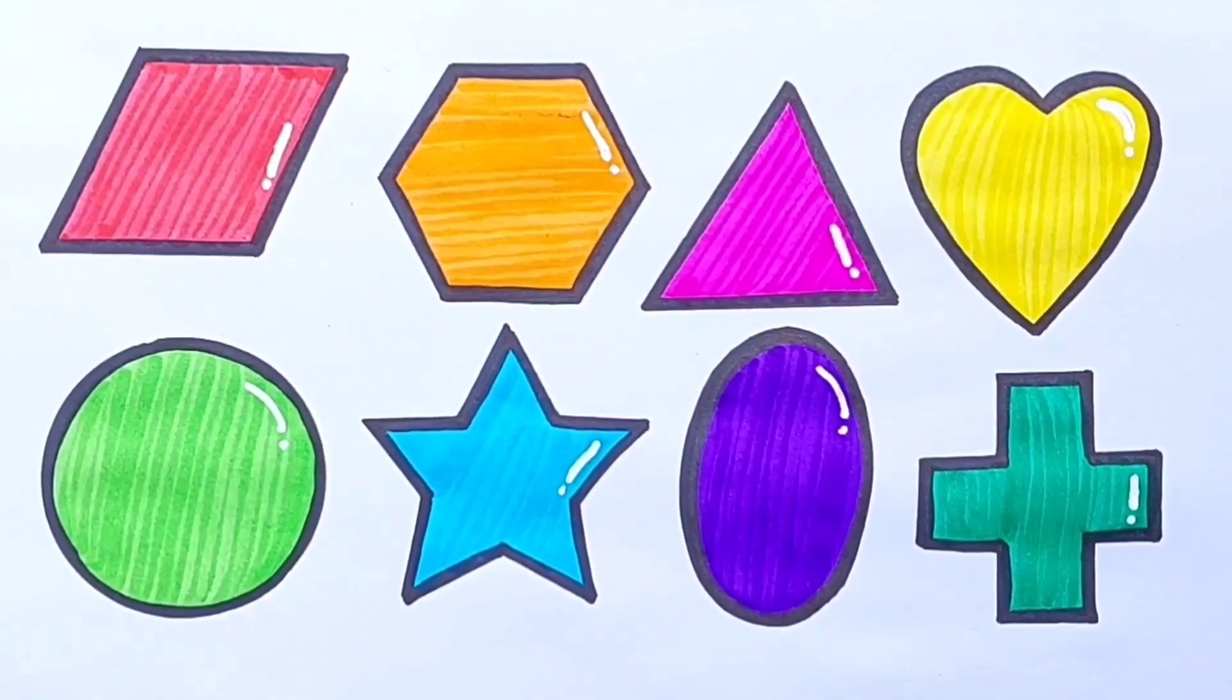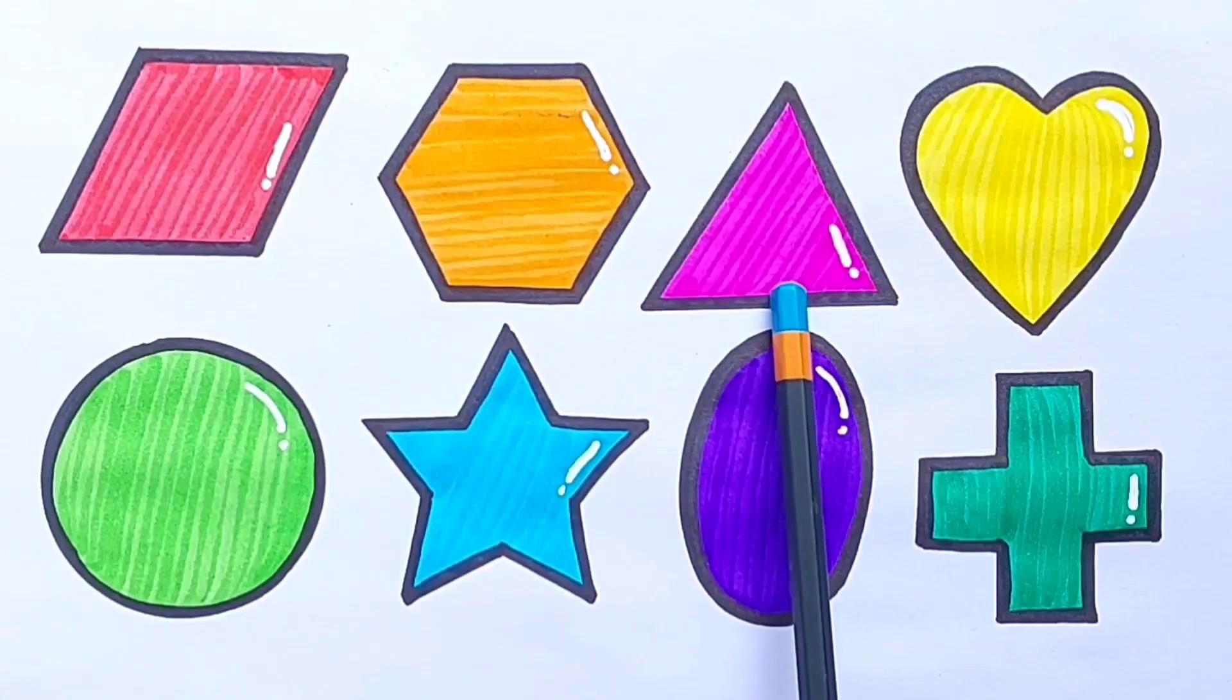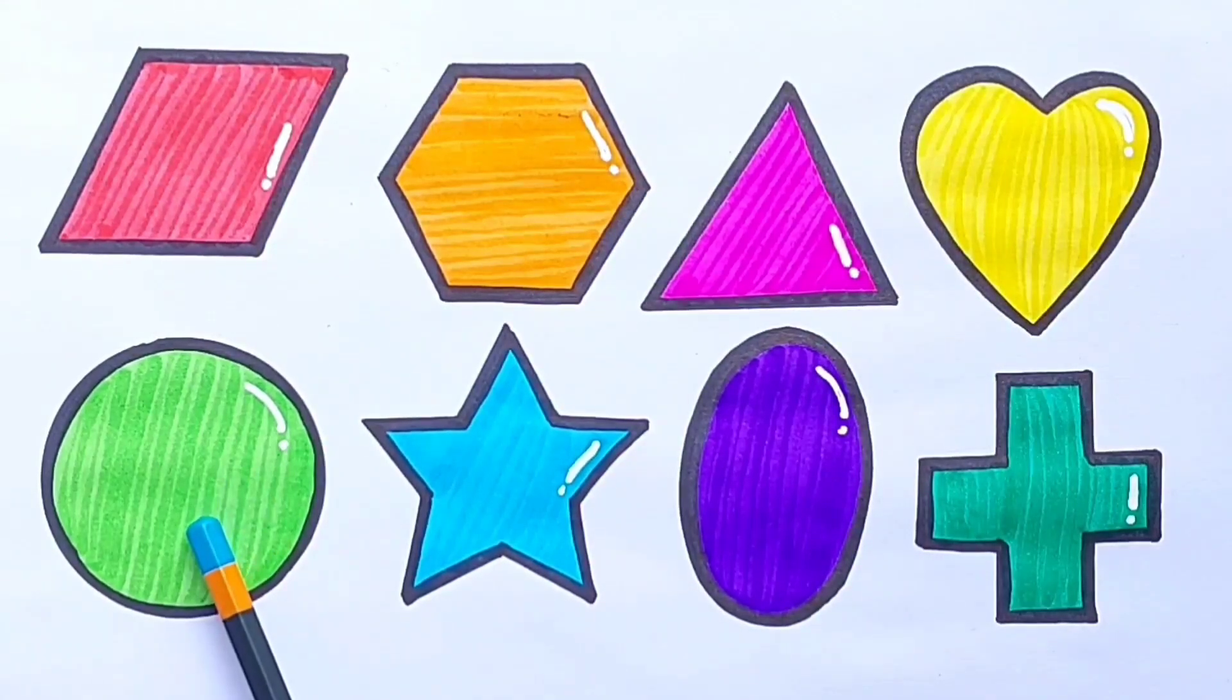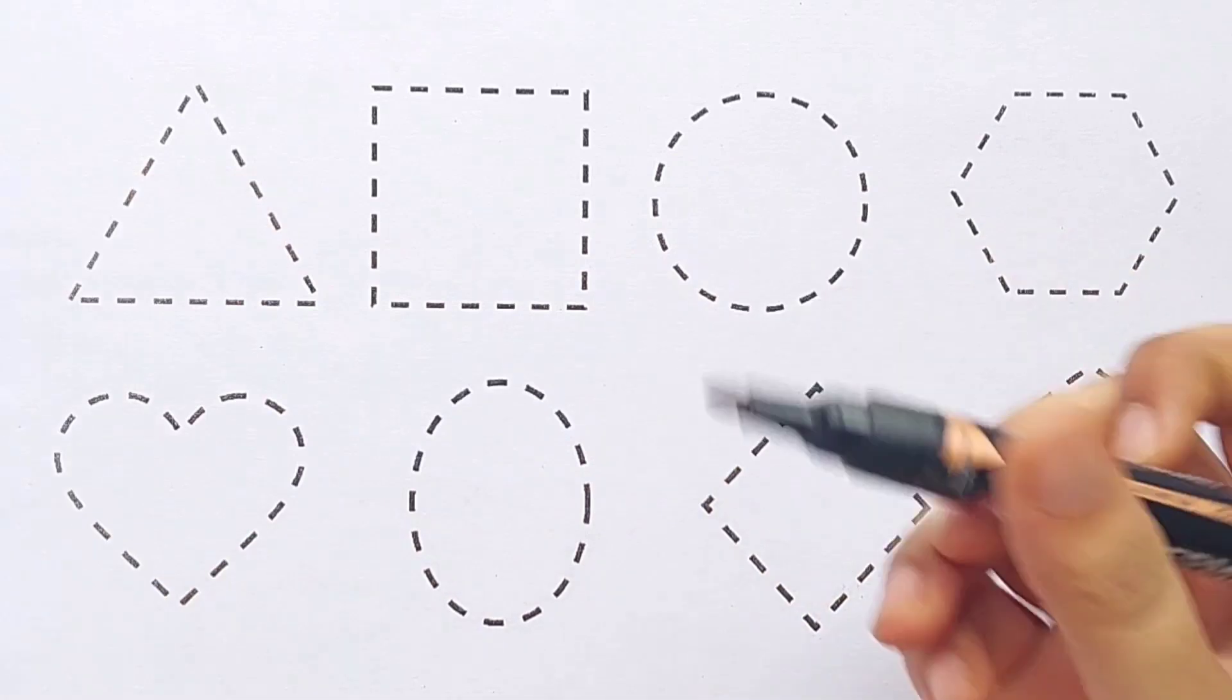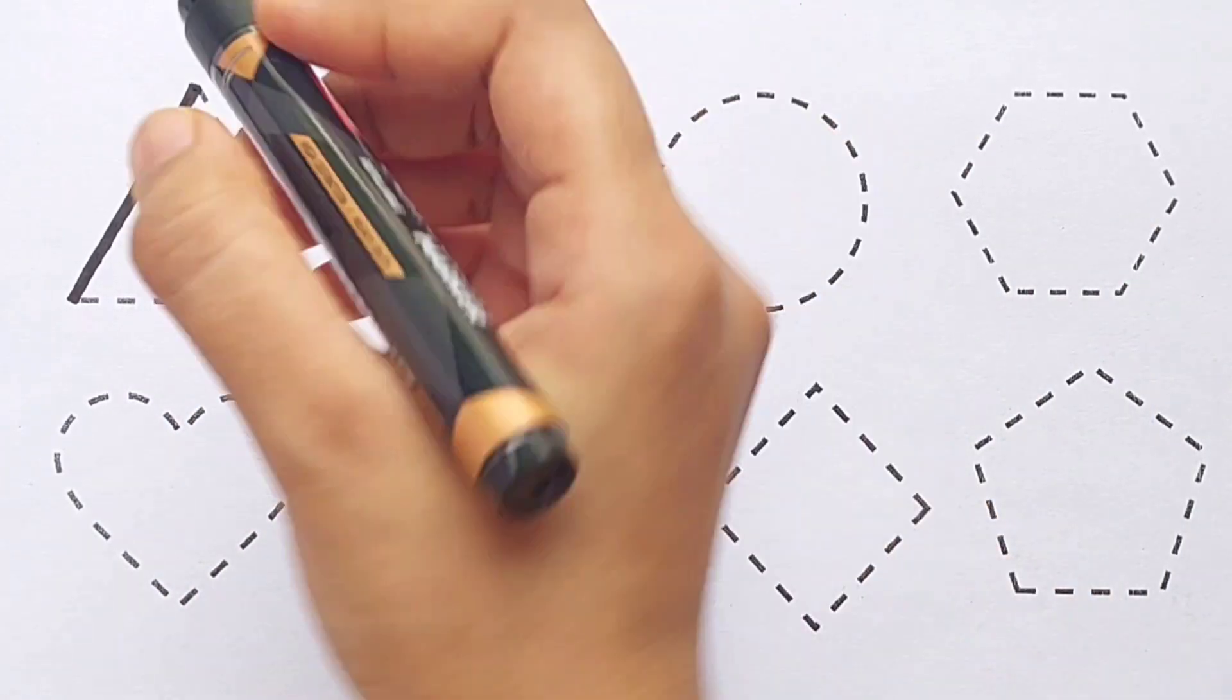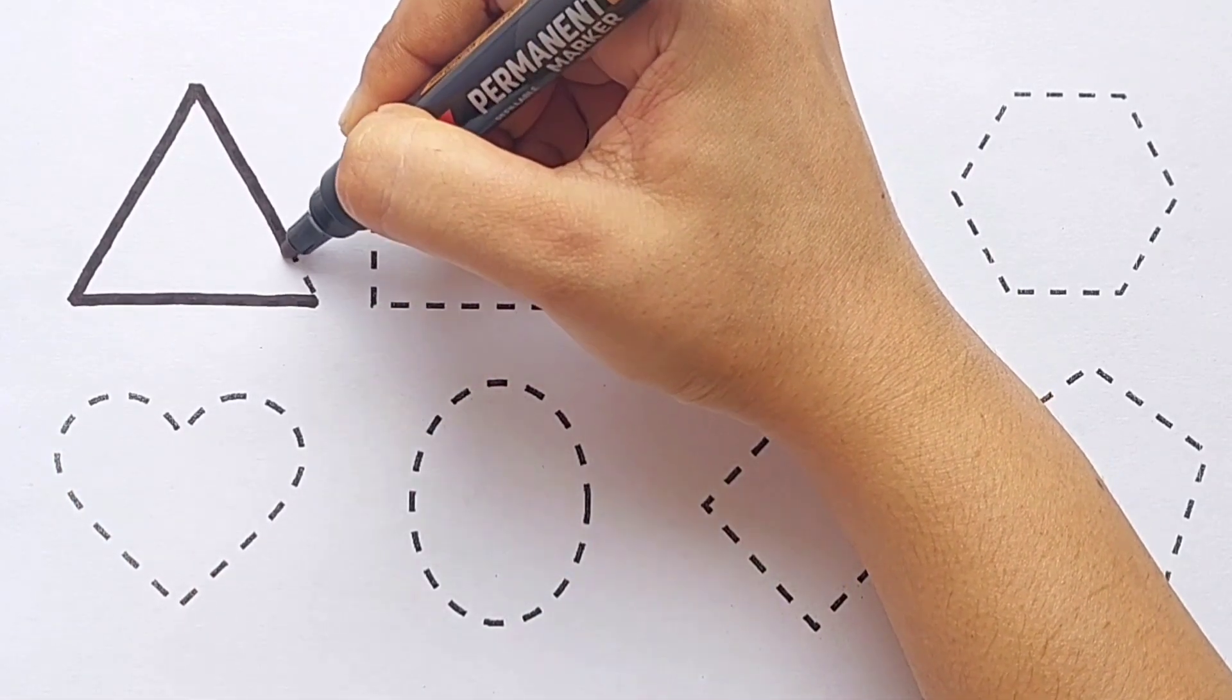Let's revise: Parallelogram, Hexagon, Triangle, Heart, Circle, Star, Oval. Oval, Triangle.